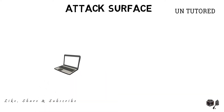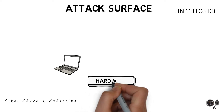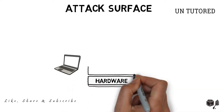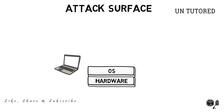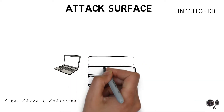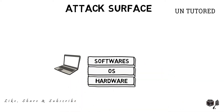Today, computers and smartphones have become an integral part of our lives, and sometimes critical information about our lives is stored on these systems. A computer system basically is a hardware device, above which an operating system is installed, and over the operating system, our applications are installed.